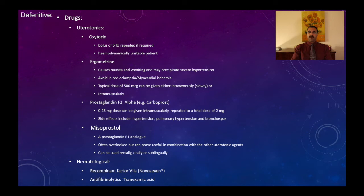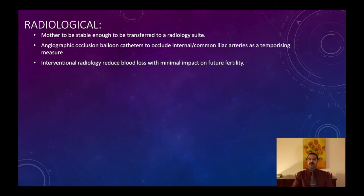Carboprost (prostaglandin F2-alpha) is 0.25 mg per dose up to eight doses (2 mg total), but it precipitates hypertension, pulmonary hypertension, and bronchospasm — avoid or use cautiously in asthmatic patients. Hematological drugs include tranexamic acid, supported by the WOMAN trial, a recent multicentre, multi-country study recommending its use. Recombinant Factor VIIa (NovoSeven) is a pro-coagulant that helps stop maternal bleeding.